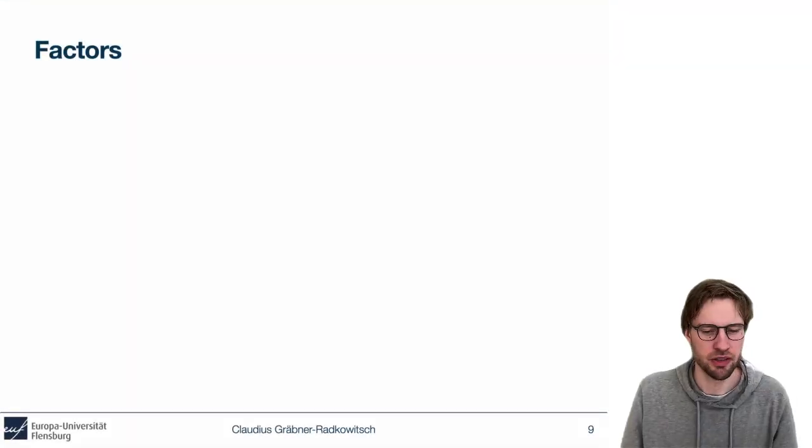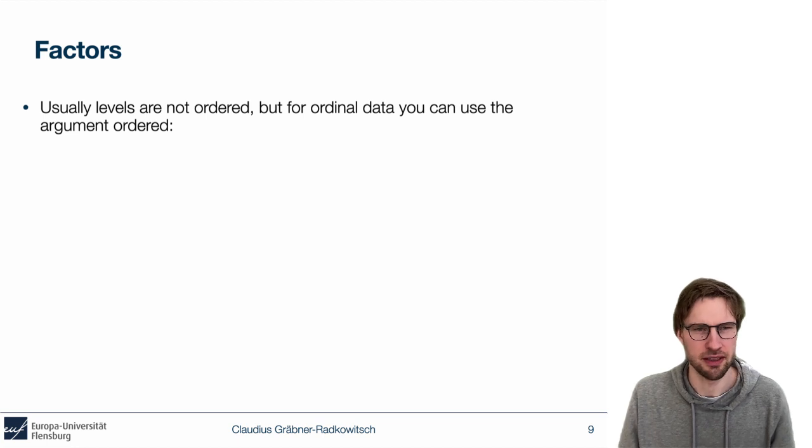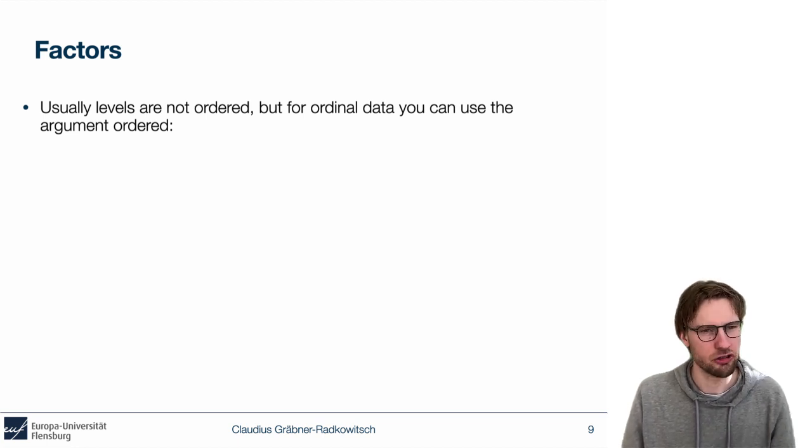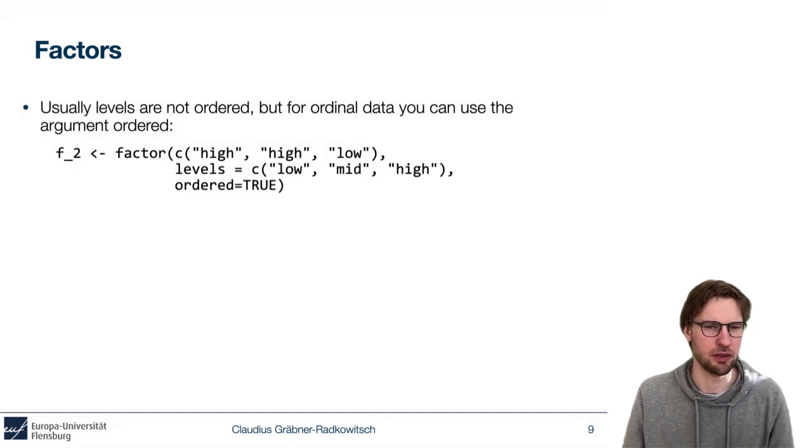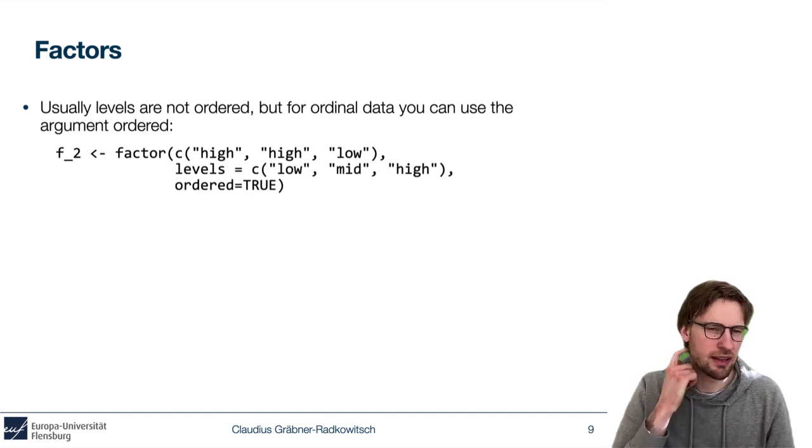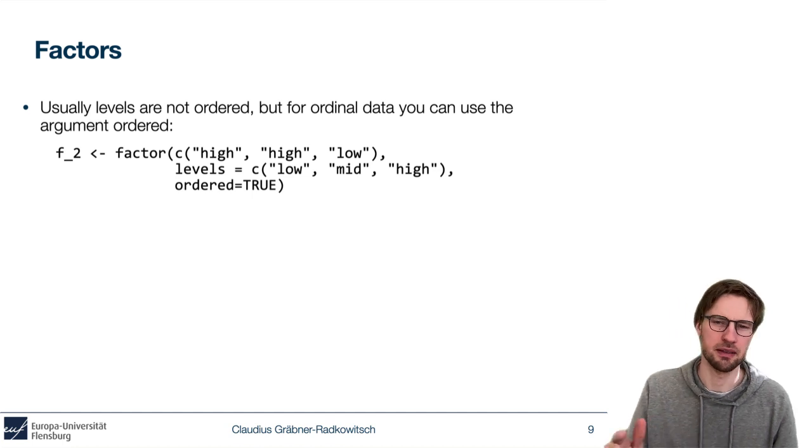Usually, factors are categorical data that doesn't have any sequence. But if you have ordinal data, you can use the argument ordered to put the different levels of the factor into a hierarchy. Here, for example, we have a factor with two elements, high, high, and low. It actually has three levels: low, mid, and high. And we set the optional argument ordered to true to make sure that the factor encodes low as being smaller than mid and mid being smaller than high.